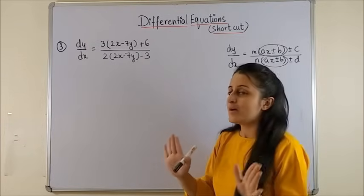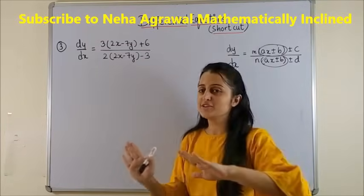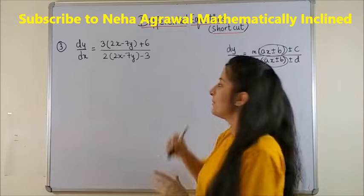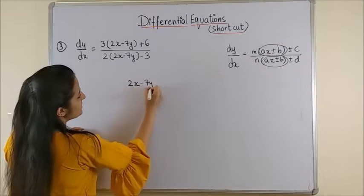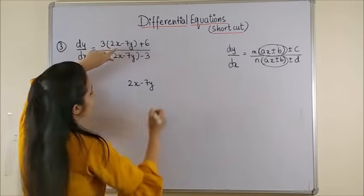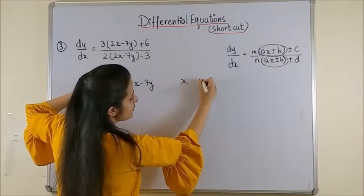Moving to the third one. Once again, once you reduce your differential equation to this form, as we can see, the common factor 2x minus 7y, we write it. The entire equation is in terms of x and y.